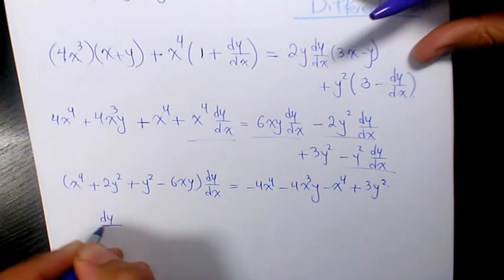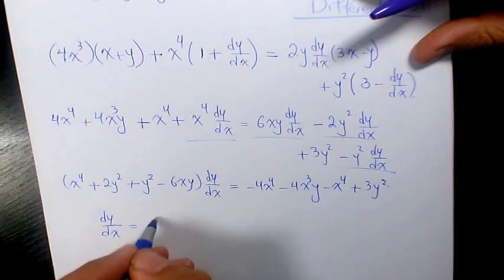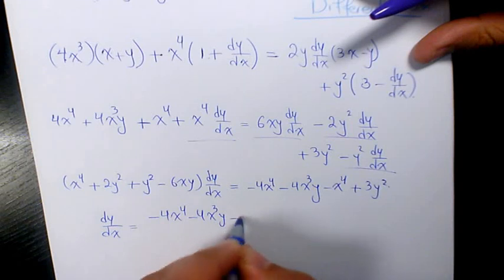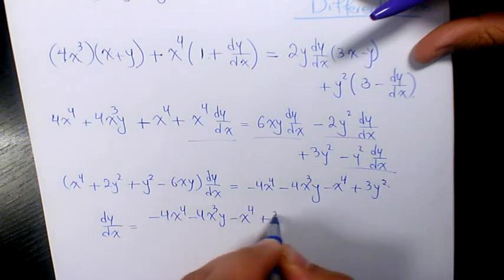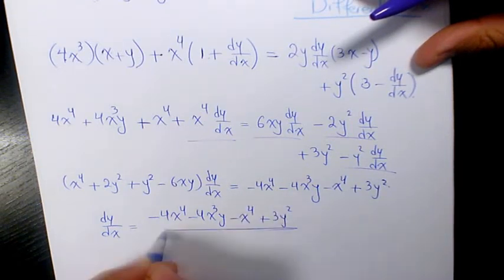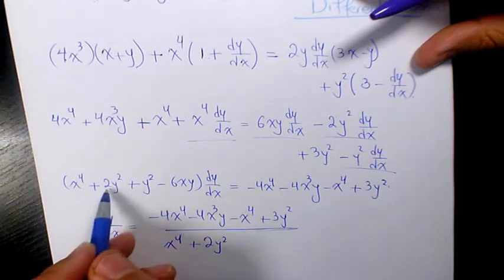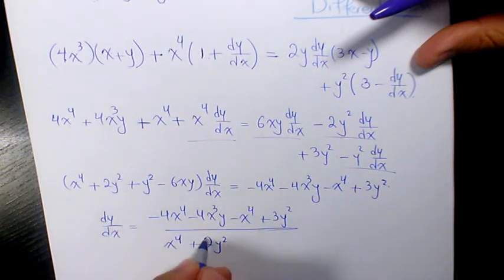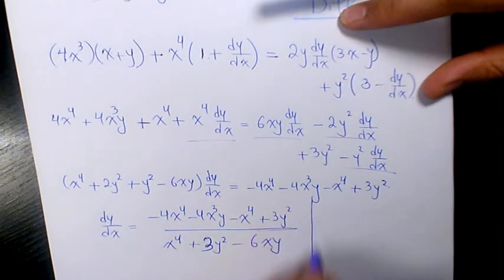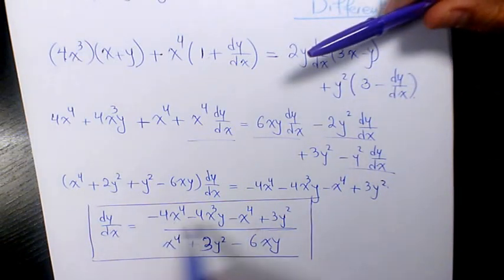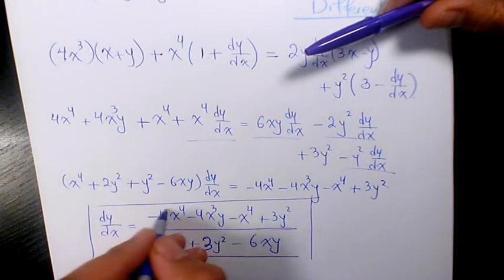So then dy over dx will be negative 4x to the power of 4 minus 4x cubed y minus x to the power of 4 plus 3y squared, over x to the power of 4 plus 3y squared minus 6xy. Negative 4 and negative 1 gives negative 5, so that's the simplified form.